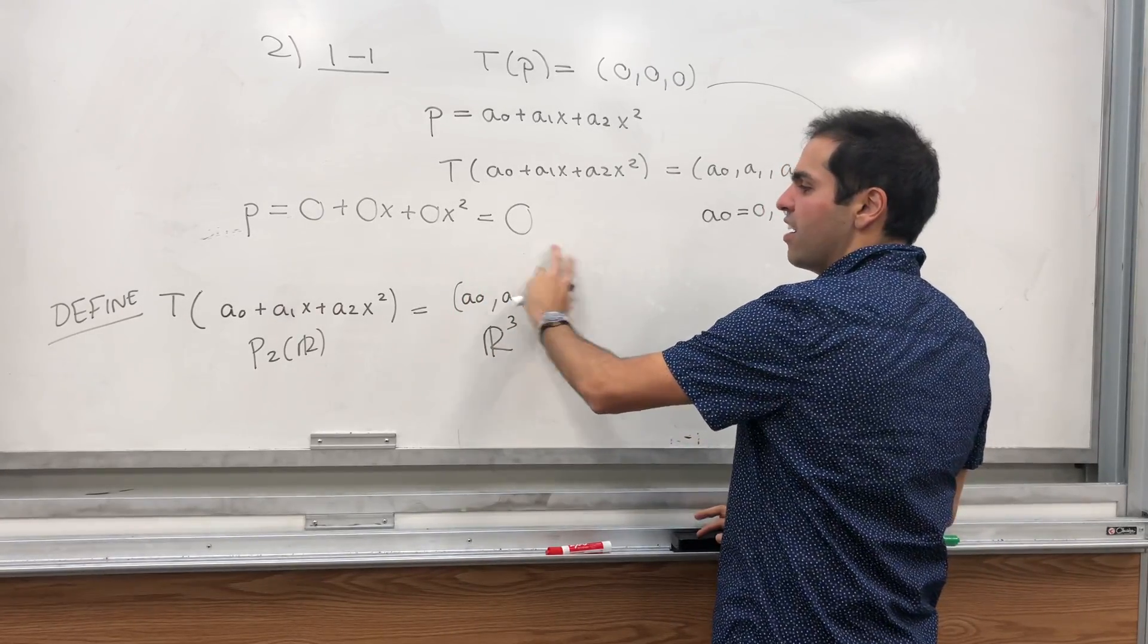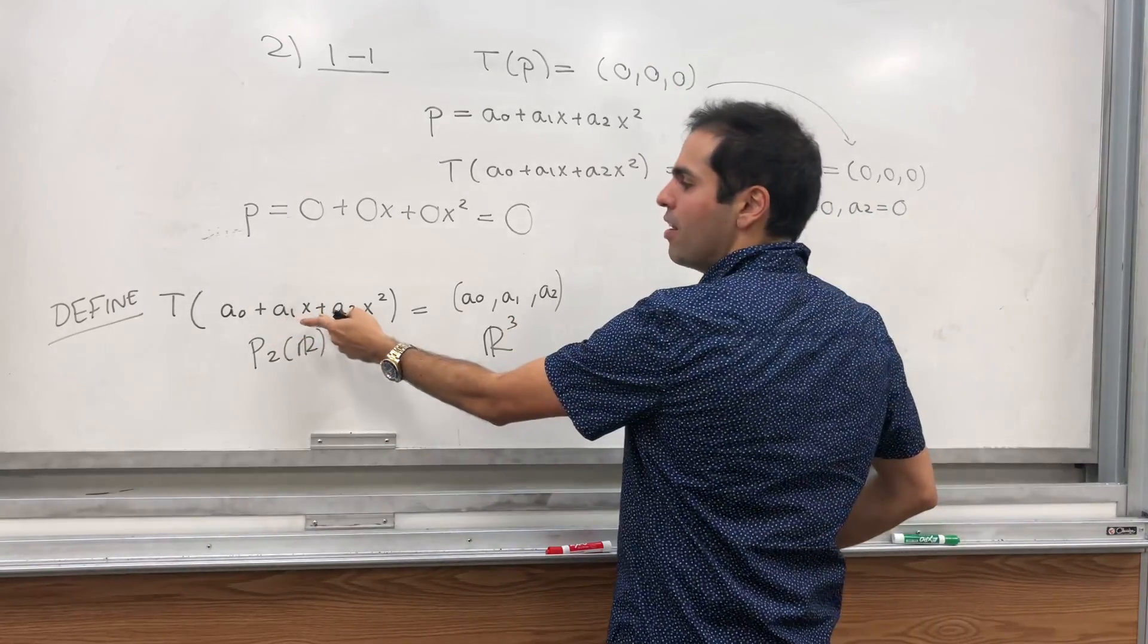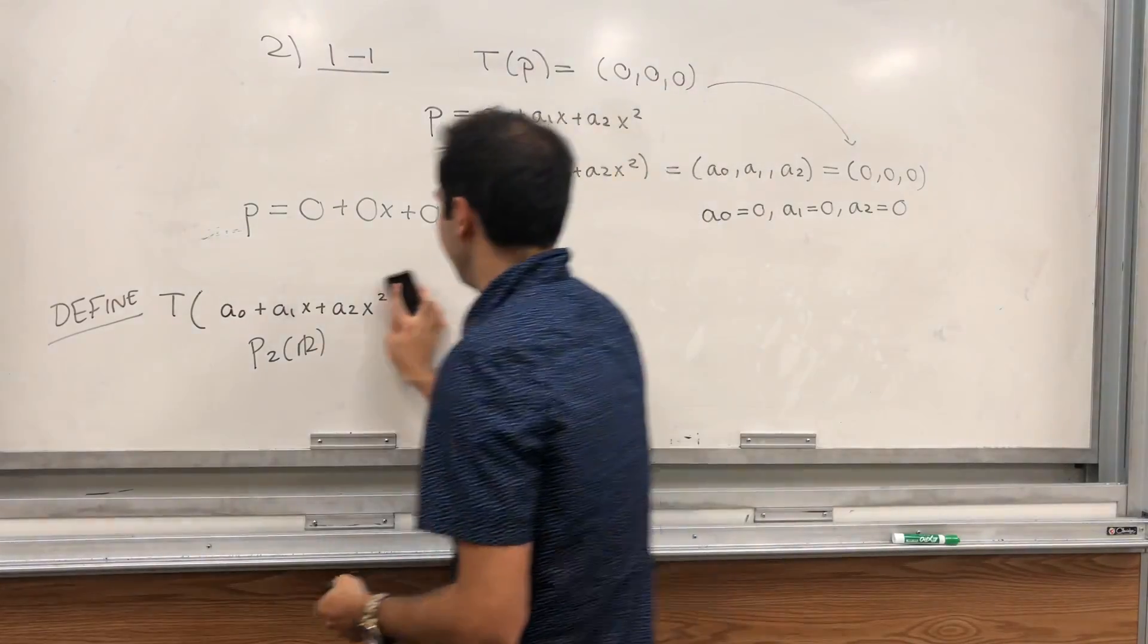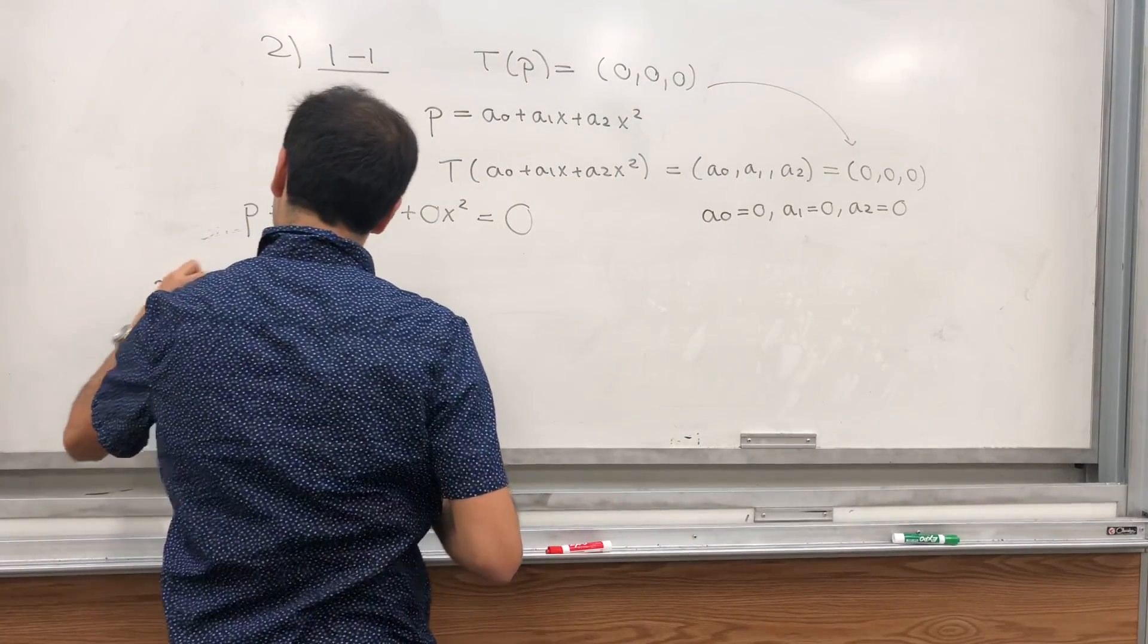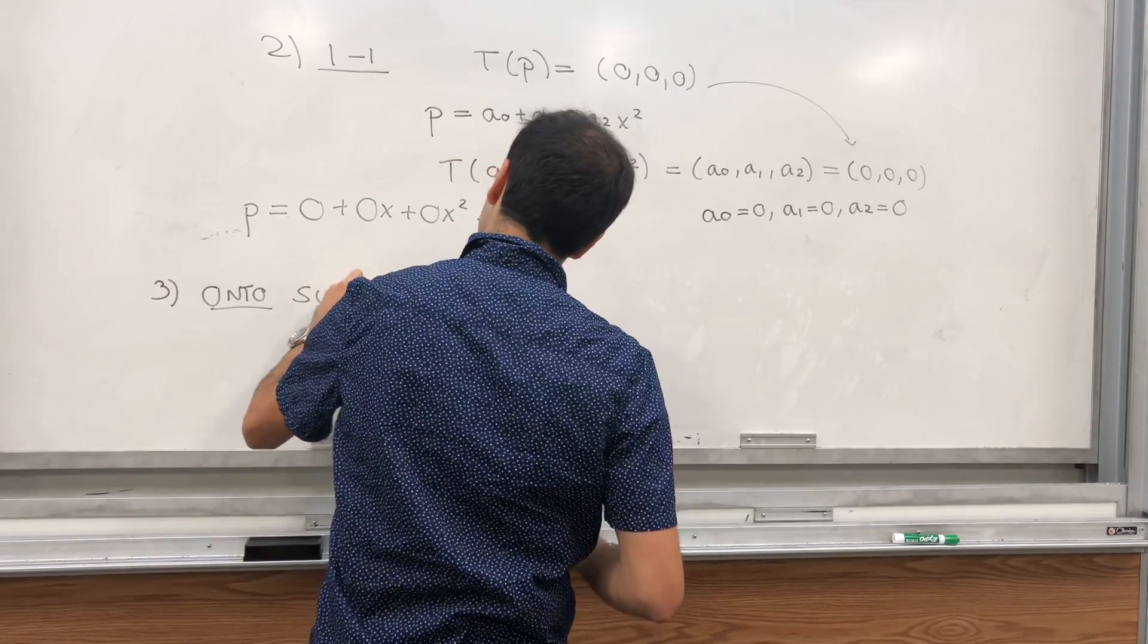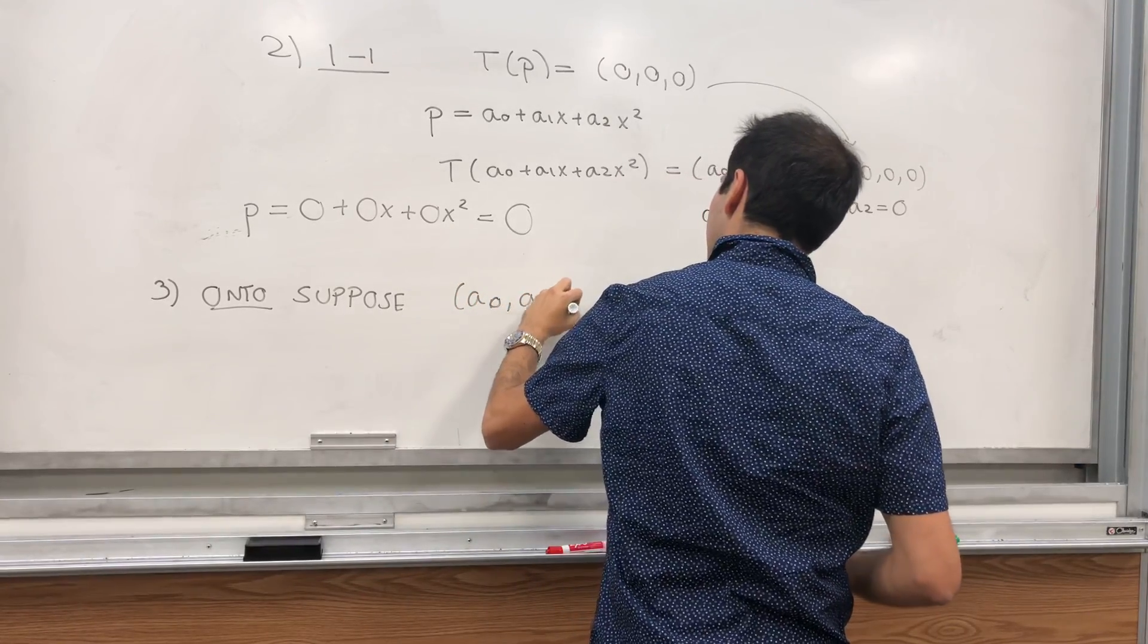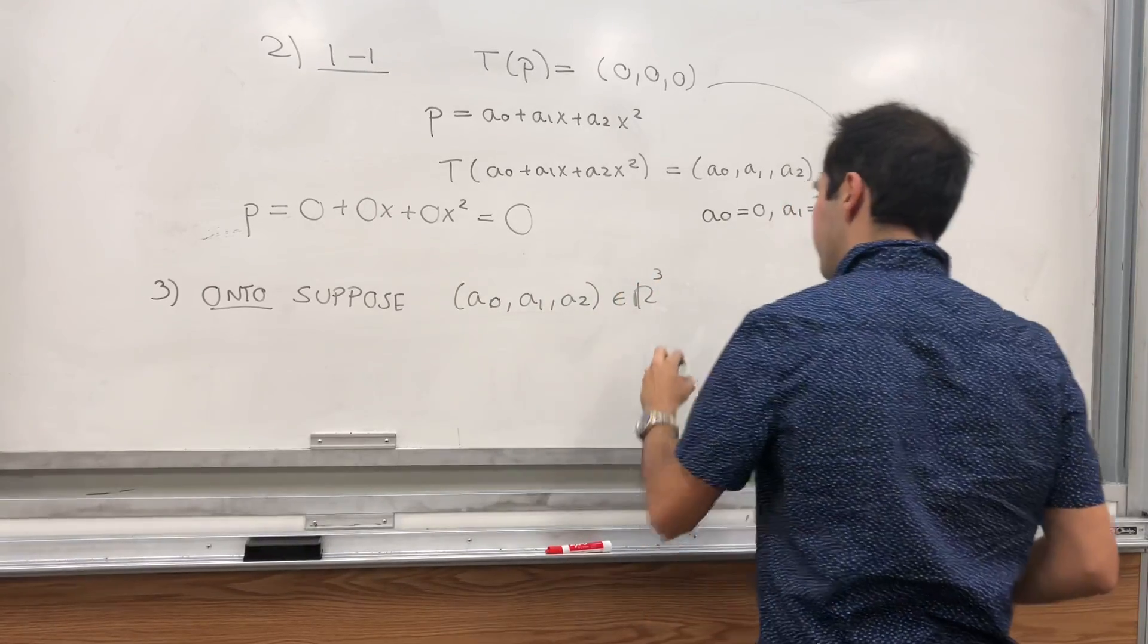Onto just means if you take an arbitrary vector in R3, you can construct some polynomial such that T of that polynomial is that vector. So, onto, suppose (a0, a1, a2) in R3 is arbitrary.